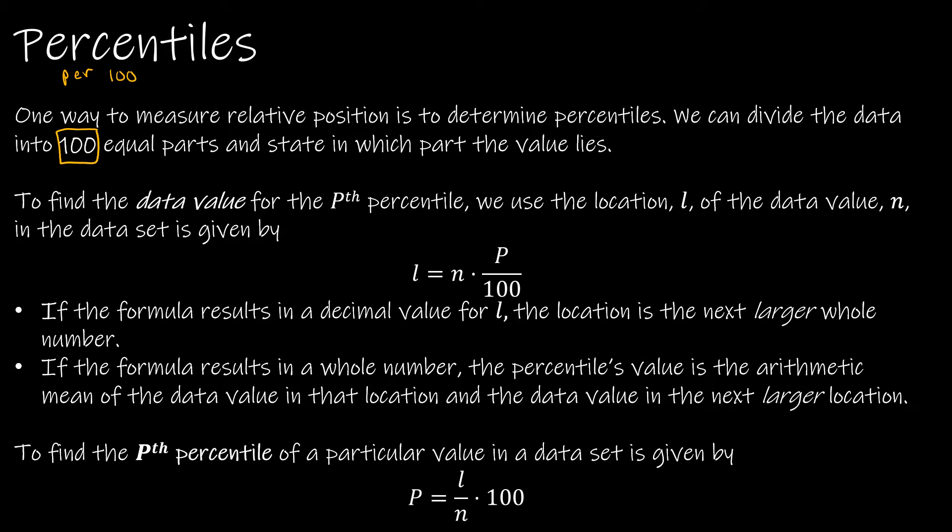If we're trying to find the data value, we need to know the location. The location is found by taking L = (P/100) × n, where P is the percentile and n is the data value. If the formula results in a decimal value for L, the location is the next larger whole number. If it results in a whole number, then the percentile's value is the arithmetic mean of the data value in that location and the next larger location. To find the percentile of a particular value, we use P = (L/n) × 100.